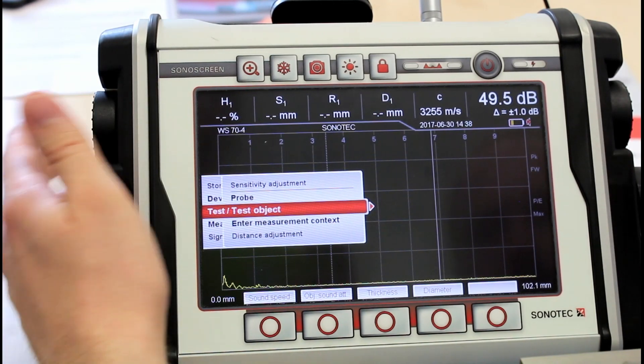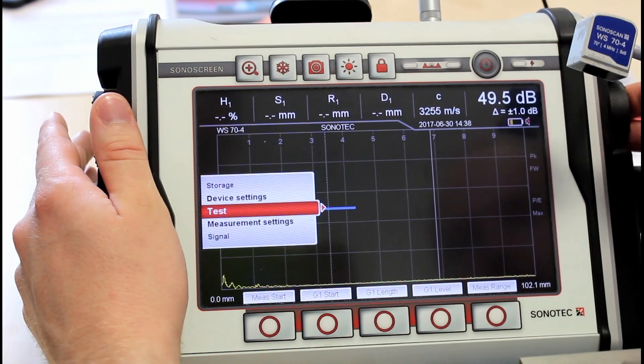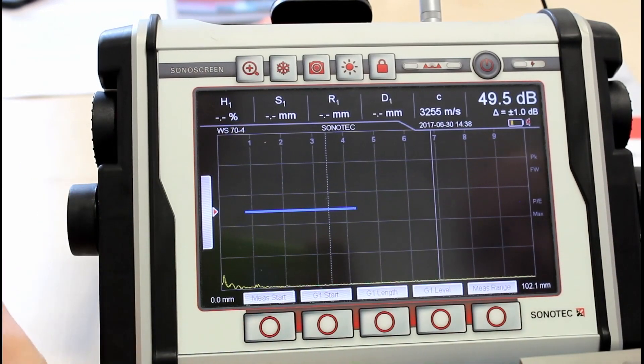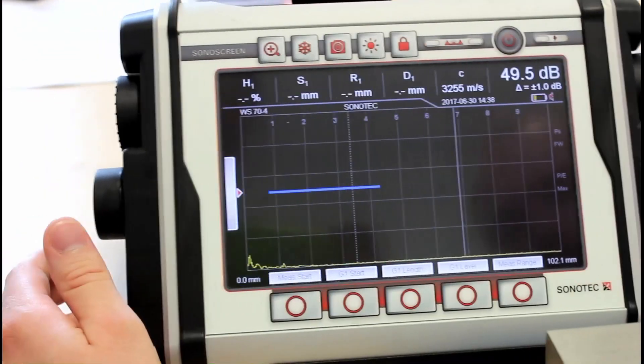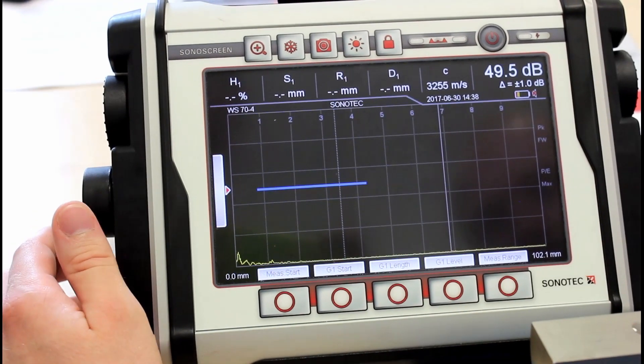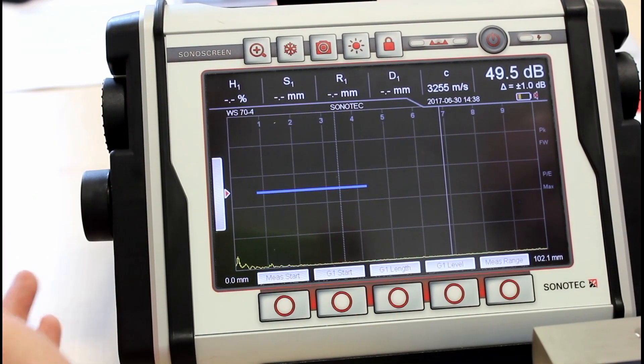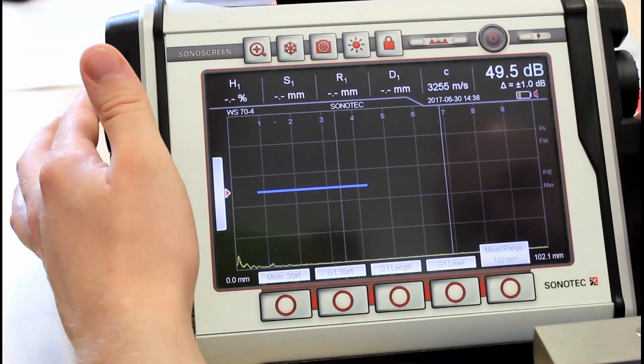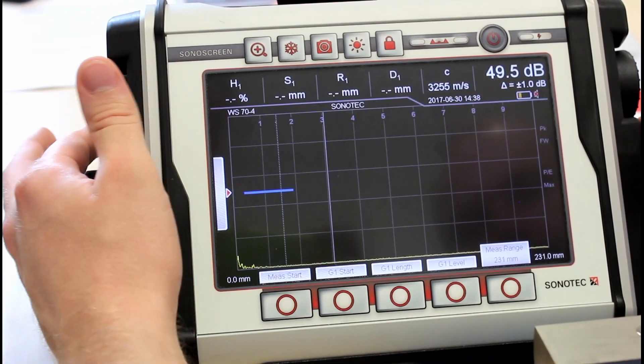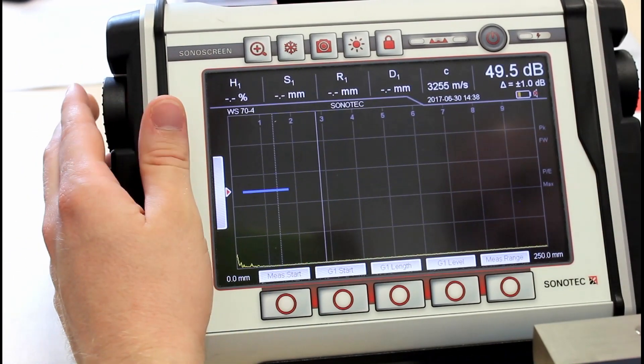The next thing you want to do is make sure that your range is okay. As we are measuring on a V1 block, the one hundred millimeter radius and we also want to see the second reflection, we need at least two hundred millimeters. So I am going to put that to approximately two hundred and fifty millimeters.